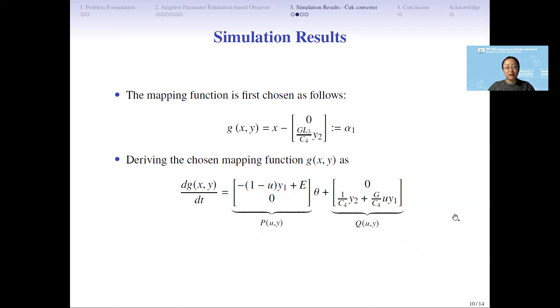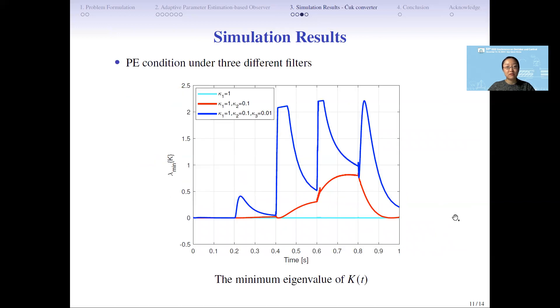By using this mapping function and the proposed method, we could first use the proposed method to check the PE condition. The figure calculates the minimal eigenvalue of K. In this picture, you could see the blue line when we're passing through the several filters, the system PE condition is enhanced.